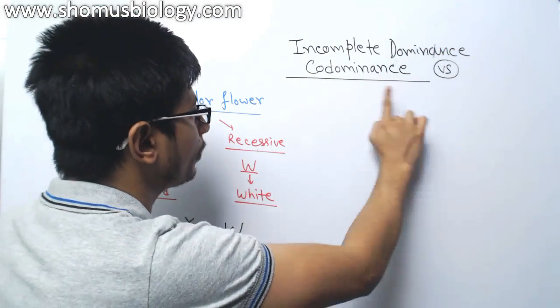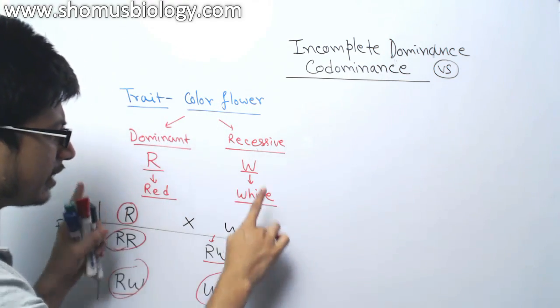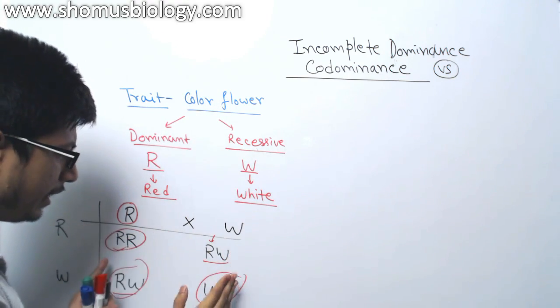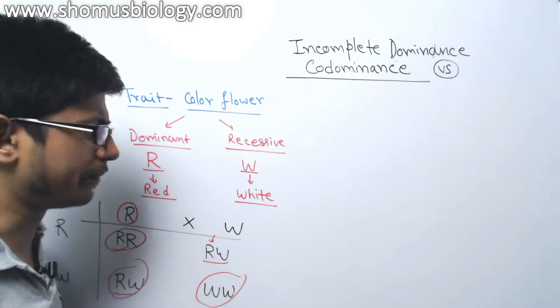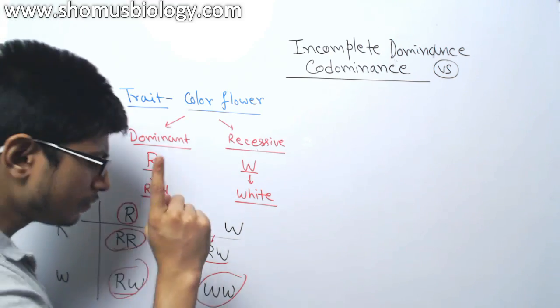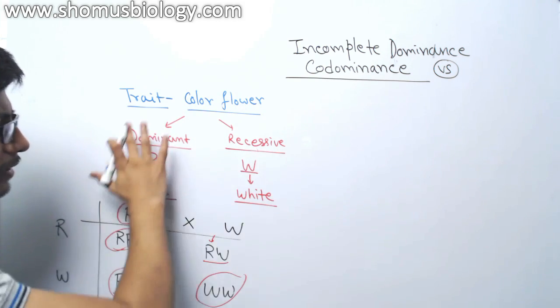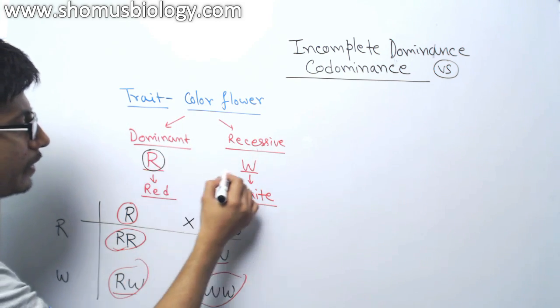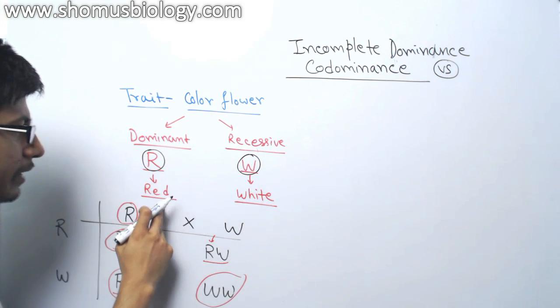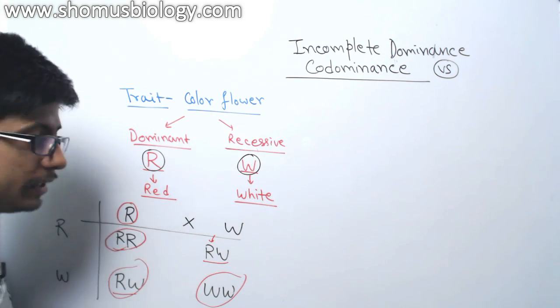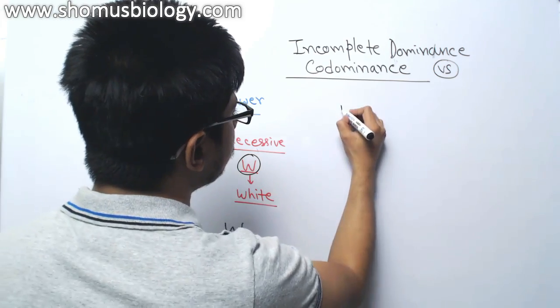On the other hand, if you talk about the codominance, the genetics between the codominance like the idea of Punnett square and stuff is very same, almost the same. There is a slight difference. Again, let us say the same thing, the same thing you take, the dominant R and the recessive W, R for the red, W for the white, coding the flower color.